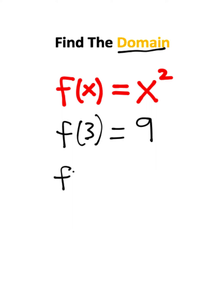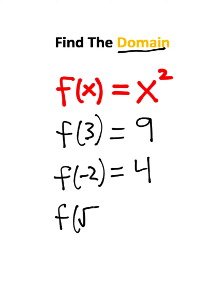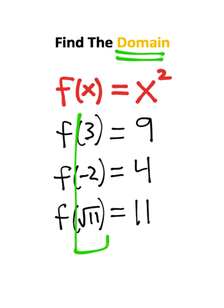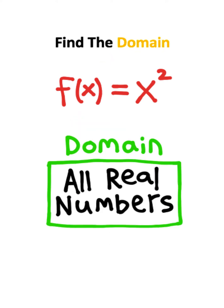Now let's try an input of negative 2. Inputting negative 2 for x will give us a positive 4. Now let's plug in the square root of 11. The square root and the square will cancel, so we'll end up with positive 11. The domain refers to our inputs, and notice our inputs can basically be anything, so we can say that the domain is all real numbers.